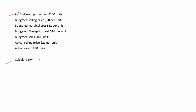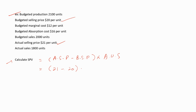Now let's do this example. Calculate the sales price variance: (Actual selling price per unit − Budgeted selling price per unit) × Actual units sold. The actual selling price is $22 per unit, minus the budgeted selling price of $20 per unit, multiplied by the actual units sold of 1,800. This gives a value of $1,800 favorable.